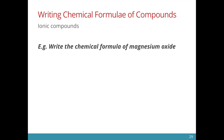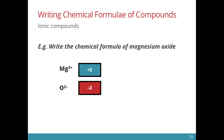Let's look at another example: magnesium oxide. Magnesium oxide consists of the magnesium ion and the oxide ion. The magnesium ion has a plus two charge, and the oxide ion has a minus two charge.